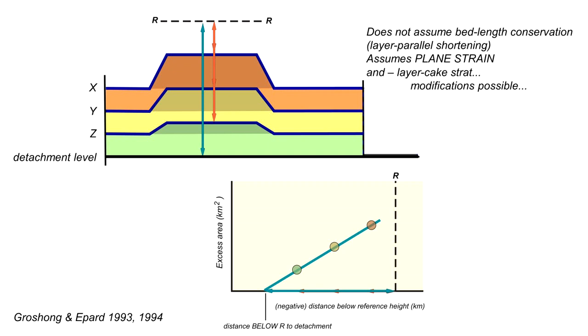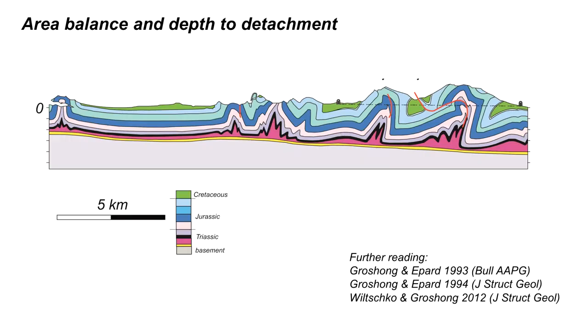That's a brief introduction to the Groshon and Hepat method. These concepts of area balancing with a view to understand and forecast the depths of detachment are really useful and important for understanding how far folds penetrate into the subsurface. These methods are powerful tools to assist in the interpretation of the subsurface.